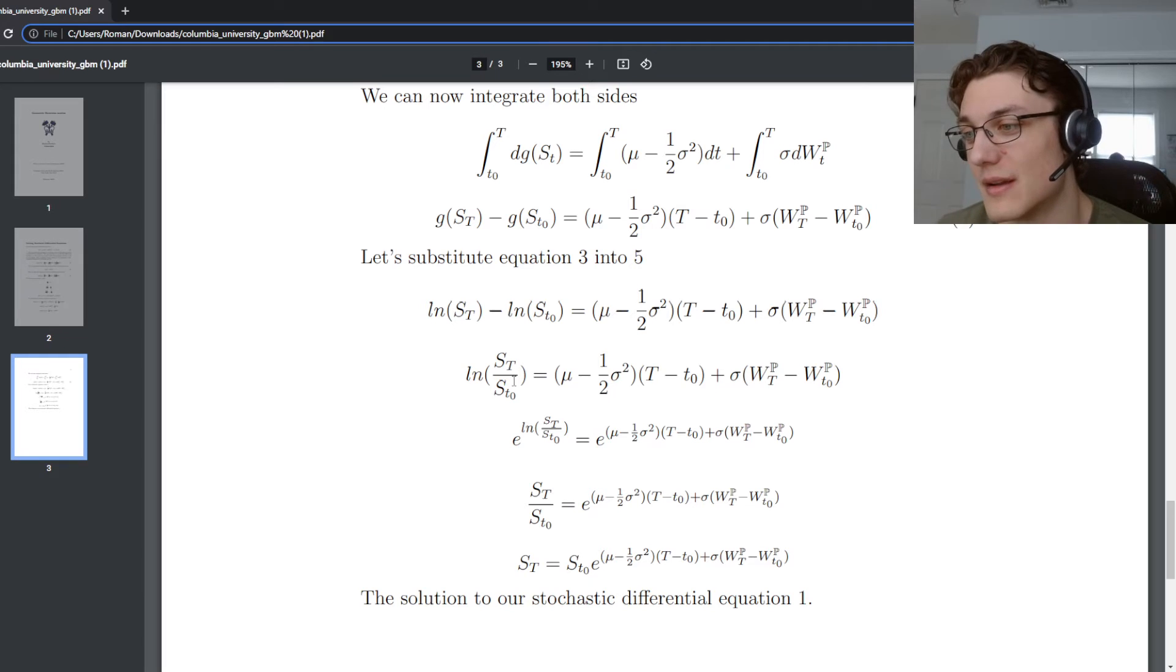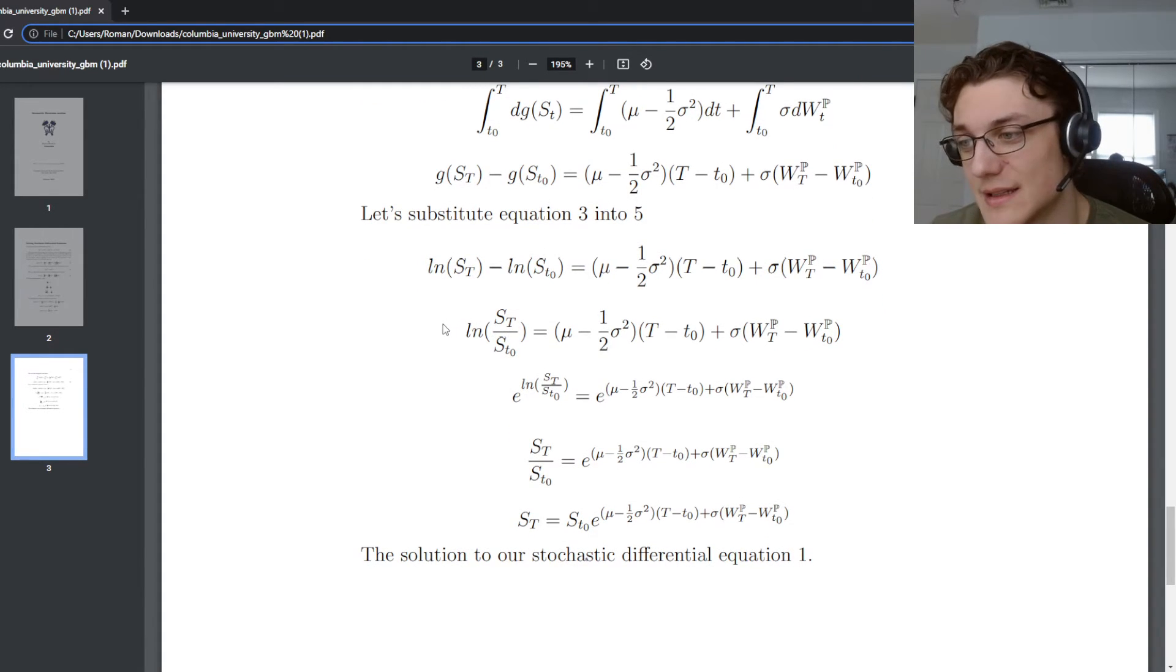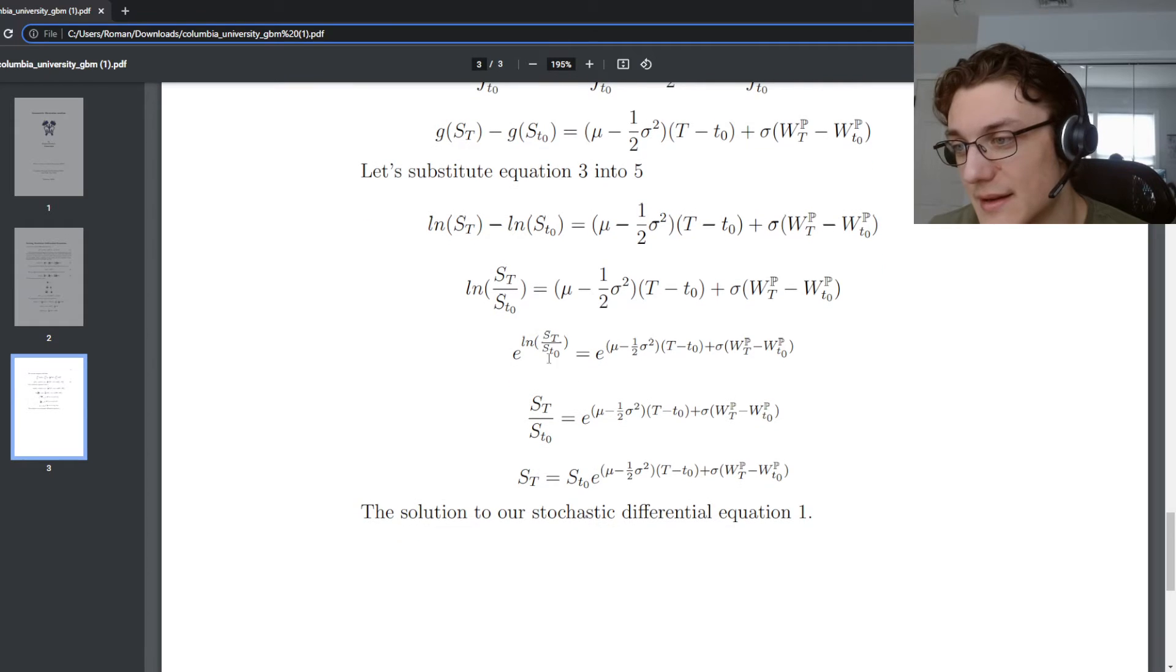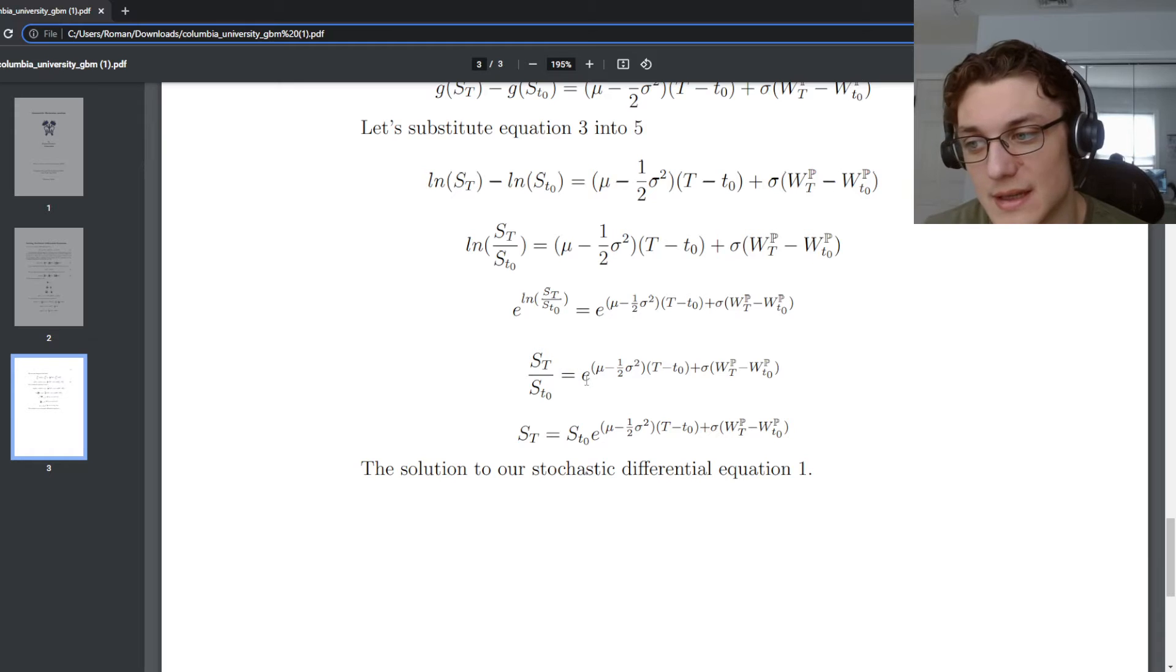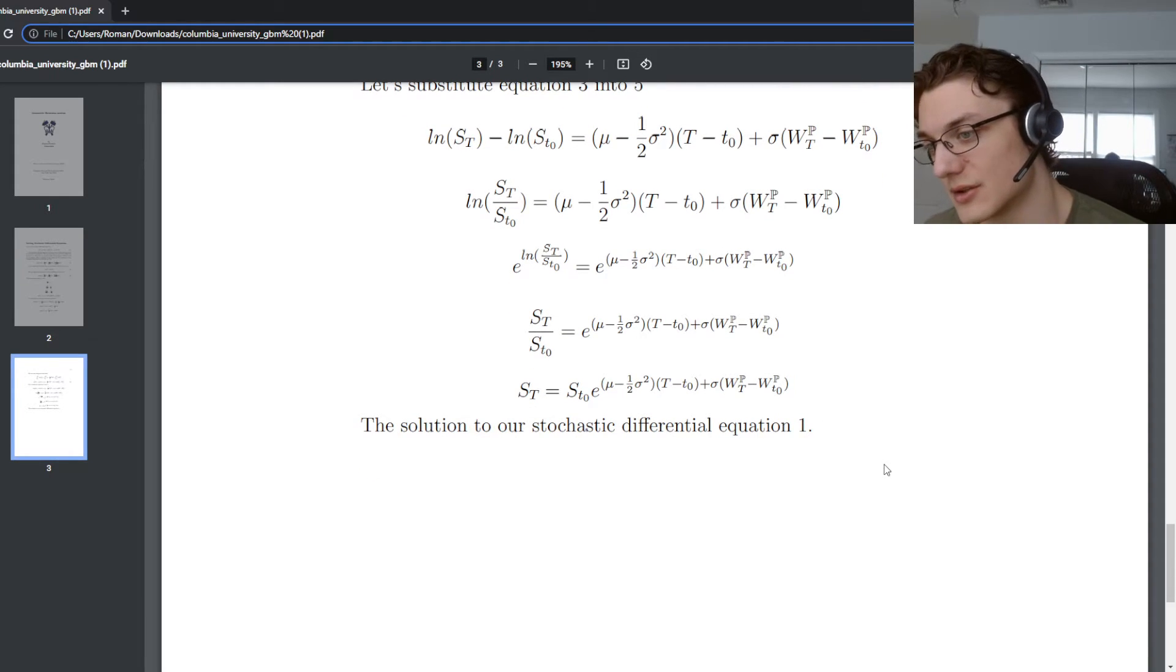And now if we want to find S sub cap t, we can just raise both sides. We just take the exponential of both sides like this. And then that cancels that out. So it's just S of t over S of t zero is equivalent to e to all that nonsense. And then we can just multiply the S of t zero over. And we have this very nice closed form solution to our stochastic differential equation.